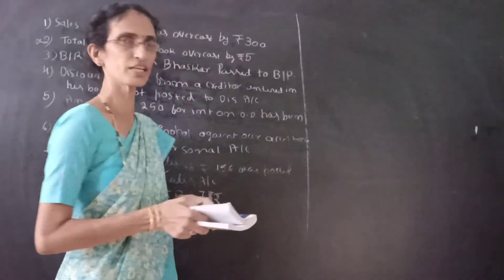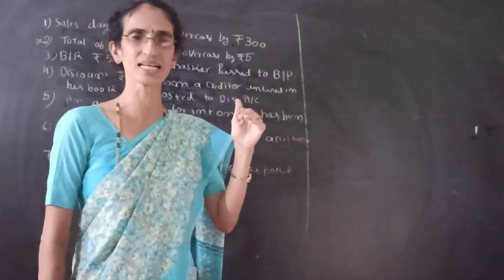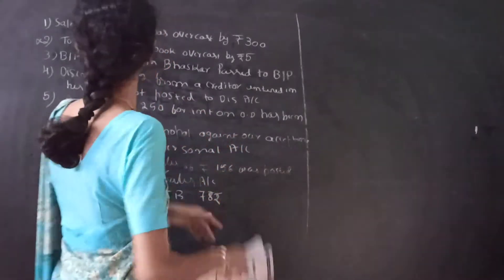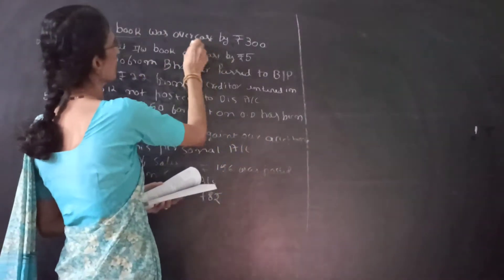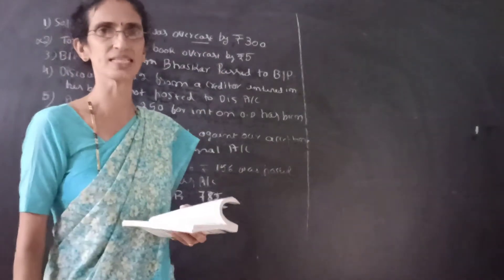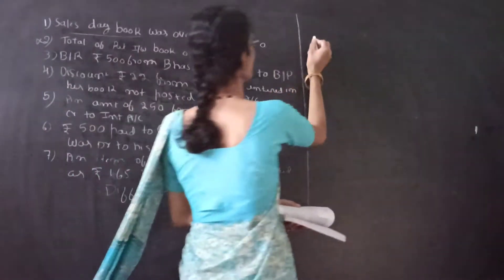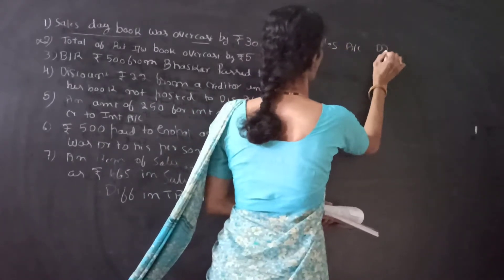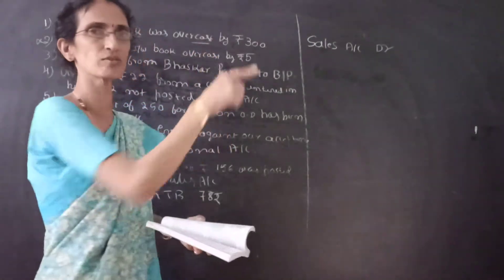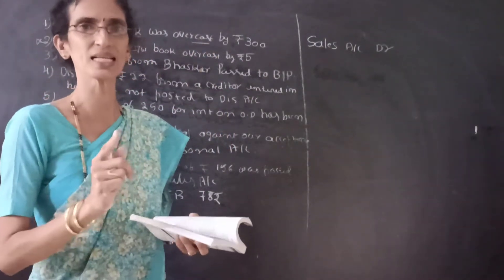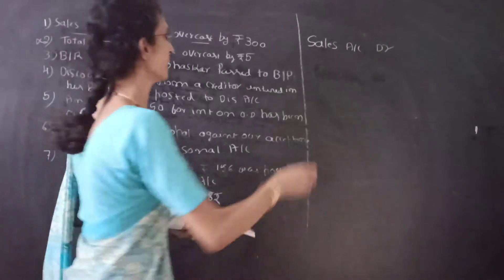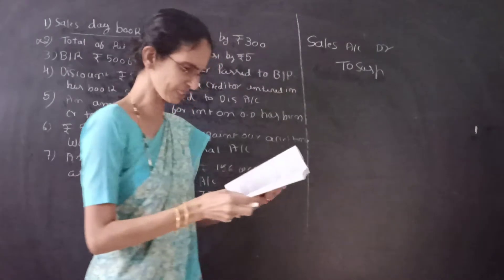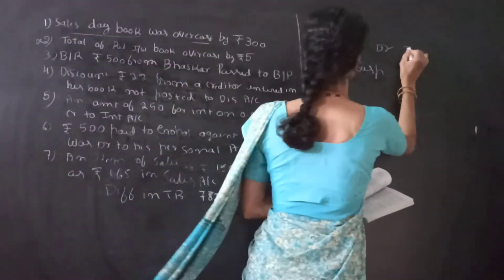If any book is undercast, we record it on the same side. If it is overcast, we record it on the opposite side. Here, the sales book is overcast. Sales is always credited, so overcast means we reverse it — we have to debit the sales account. Since only one account is affected, it is a one-sided error, so the other side is suspense account. The entry is: Sales Account Dr. to Suspense Account, ₹300.